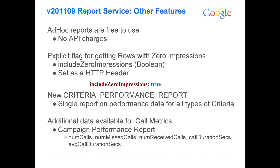We also added a new criteria performance report, which many people have asked for. We previously had the keywords performance report and URL performance report. Now there's a single criteria performance report that includes all types of criteria, so you can get consistent statistics across all your criteria in one report instead of requiring several reports or relying on special behavior in the keyword performance report.